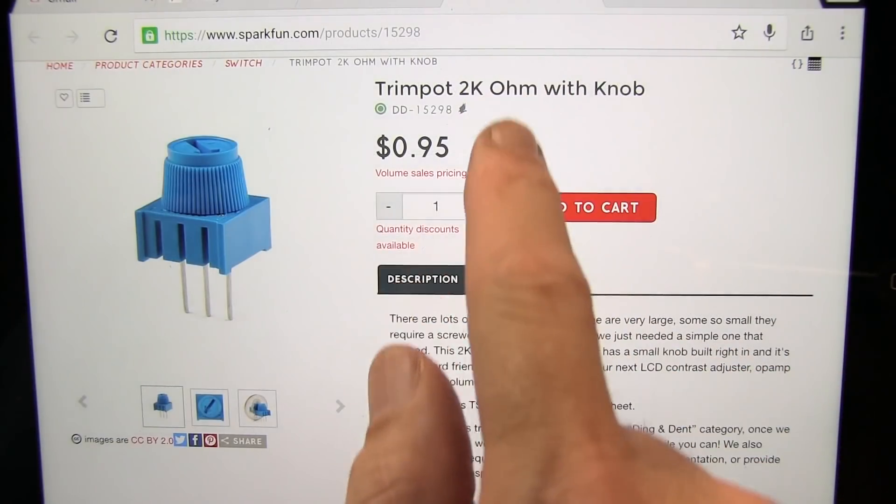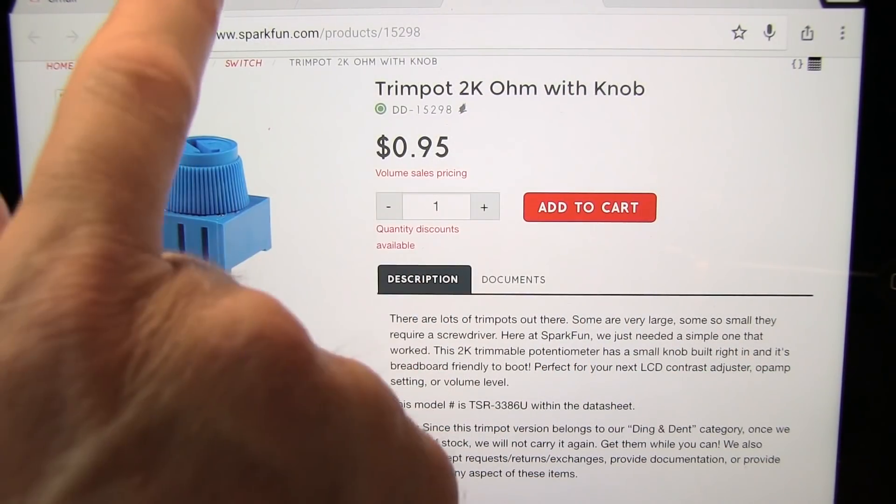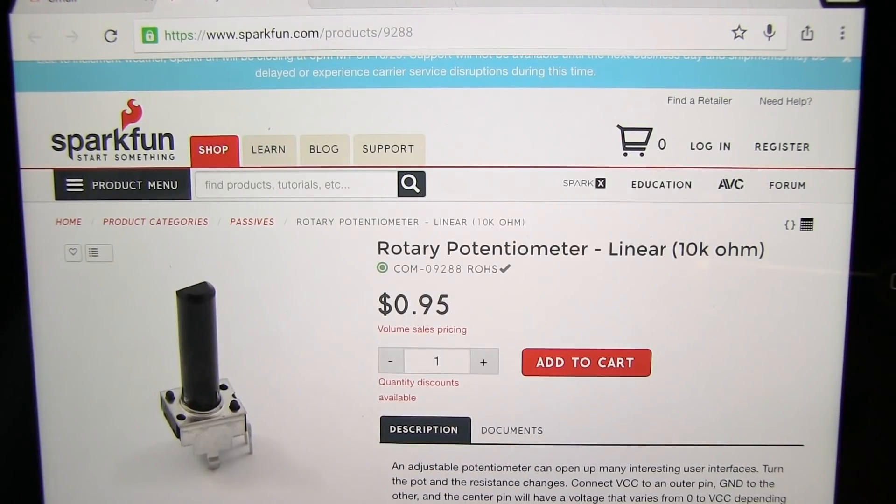You'll notice that this trim pot with a knob is $0.95, and this rotary potentiometer is also $0.95. Both of them are proto-board-friendly. So if you're going to pick up something, these guys here are going to last you much, much longer.